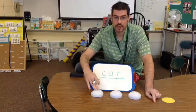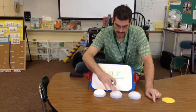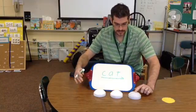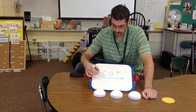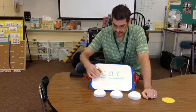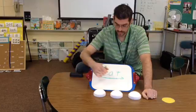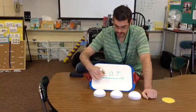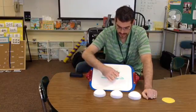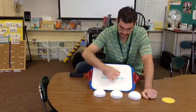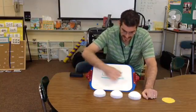All right, so the first letter is K, A, T. So let's sound it out again. K, A, T. Let's say it a little bit faster. K, A, T. Say it faster. Cat. So real fast. Cat.